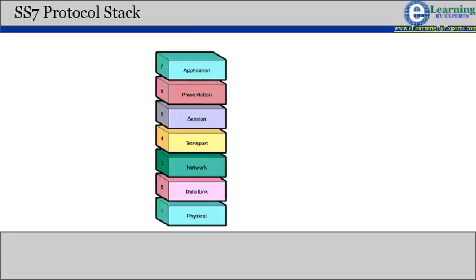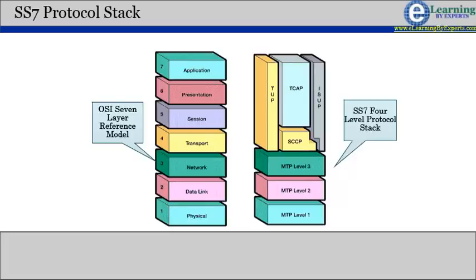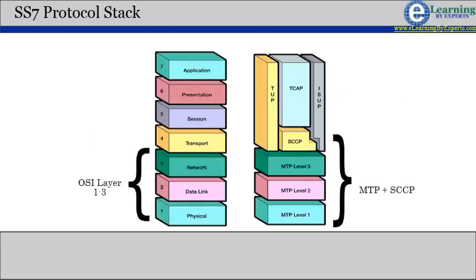With reference to the Open System Interconnection OSI 7-layer reference model, SS7 uses a 4-level protocol stack. OSI layer 1 through 3 services are provided by the MTP together with the YIS-CCP.